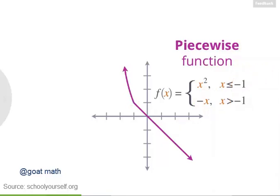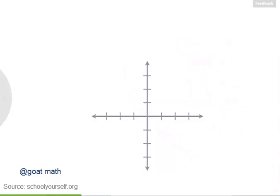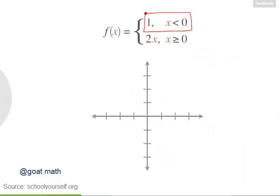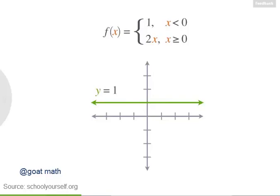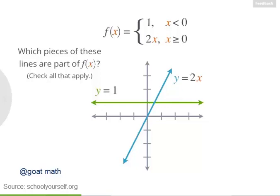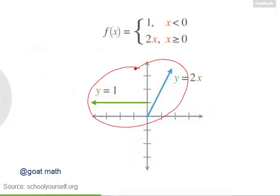But not all piecewise functions are continuous like this one. Let's look at another example. Suppose f of x equals 1 for all x less than 0, and it equals 2x for all x greater than or equal to 0. Here's the function y equals 1, and here's the function y equals 2x. Which pieces of these two lines are also part of the function f of x? Notice there's a discontinuity, or a break, in the function when x equals 0.